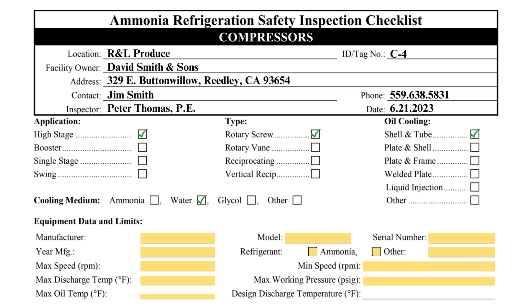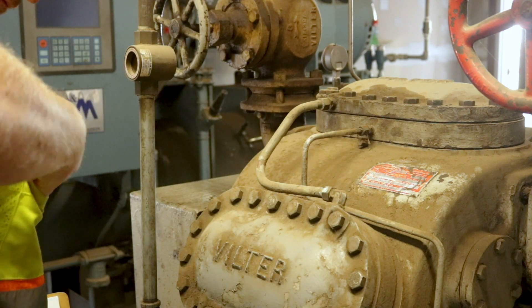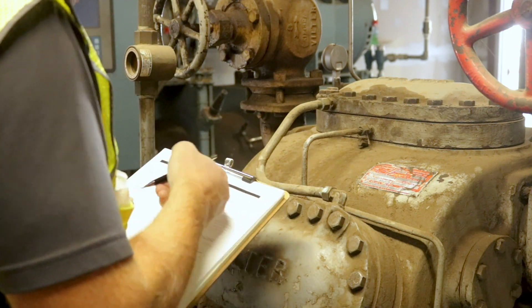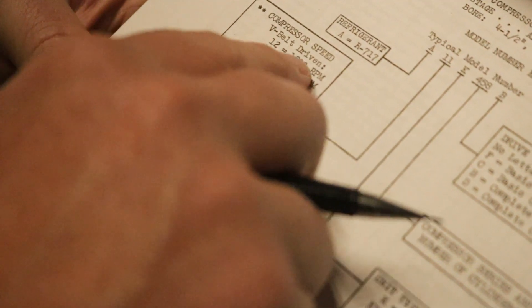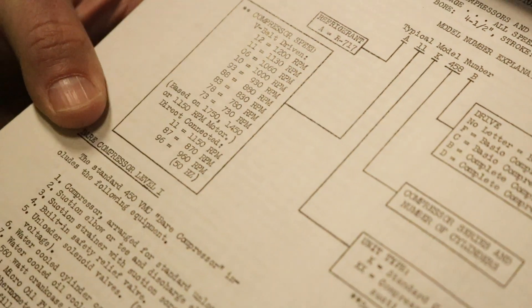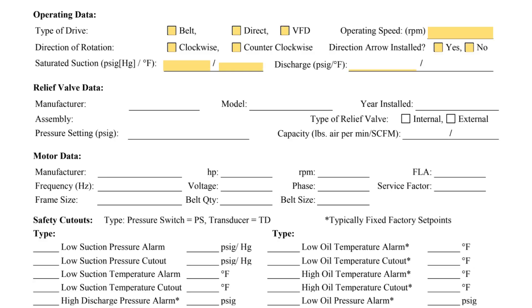Much of the information requested in the equipment data and limits section can be obtained from the compressor's nameplate and manufacturer specifications. The maximum speed for the reciprocating compressor was able to be obtained from the manufacturer literature. In the section titled operating data, this information will vary from compressor to compressor and will require operator input or design information about the system.